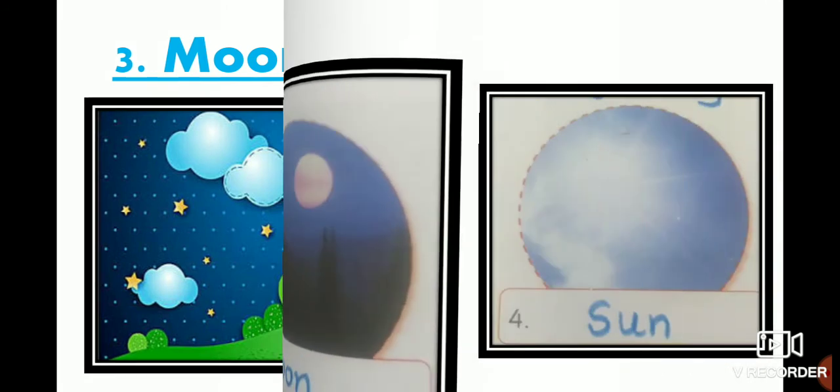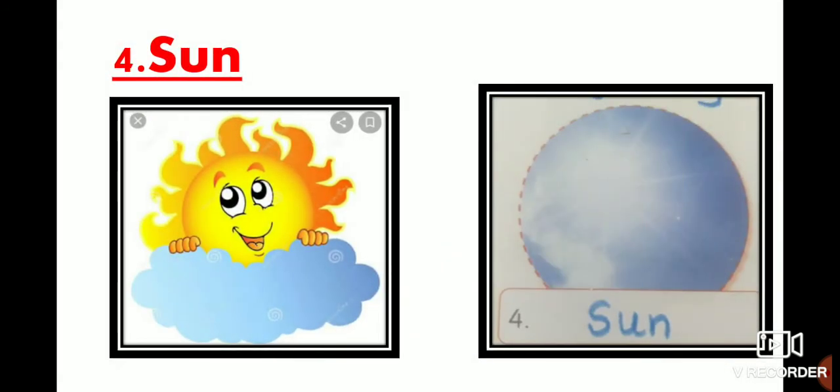Now let's see the fourth. Yes, everyone recognizes this. What is it? It's the sun. S-U-N. Sun. S-U-N. Sun. So what is this, children? This is the beautiful Suraj Dada, right? This is called the sun. S-U-N. Sun.